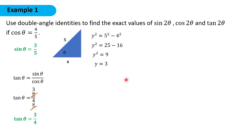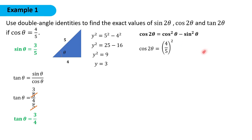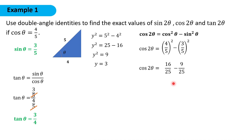Now let us solve for cosine 2θ using cosine²θ minus sine²θ. So we have (4/5)² minus (3/5)², that would be 16/25 minus 9/25. Therefore, cosine 2θ is 7 over 25.